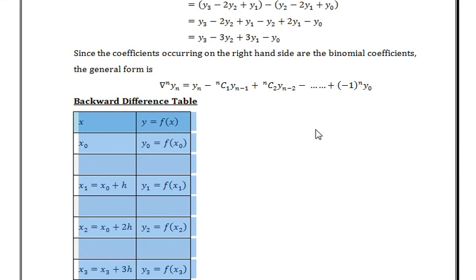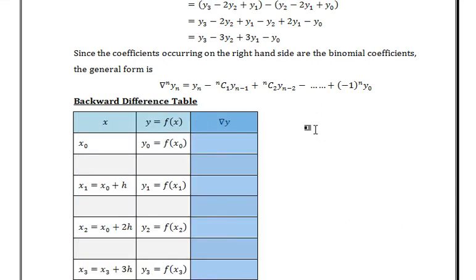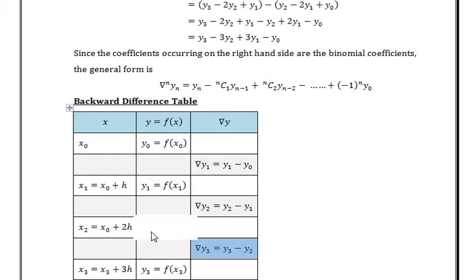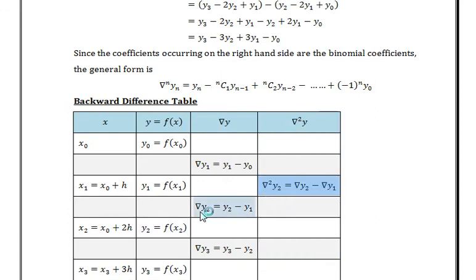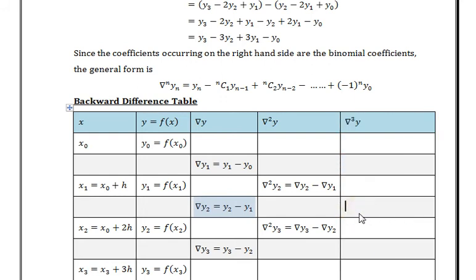The backward differences table calculation is the same as we saw in the forward differences table. ∇y1 = y1 - y0, ∇y2 = y2 - y1, ∇y3 = y3 - y2. For second differences, ∇²y2 = ∇y2 - ∇y1, and ∇²y3 = ∇y3 - ∇y2. For the third difference, ∇³y3 = ∇²y3 - ∇²y2.